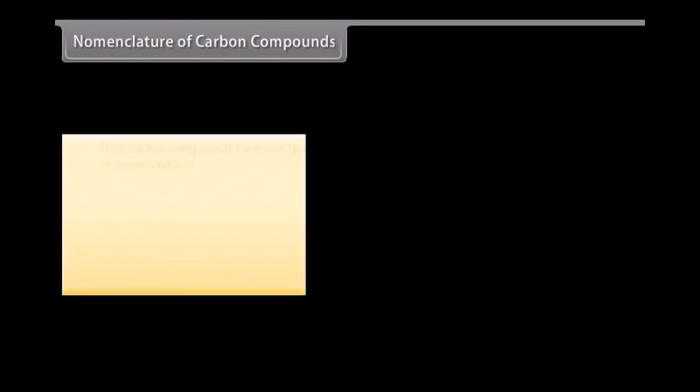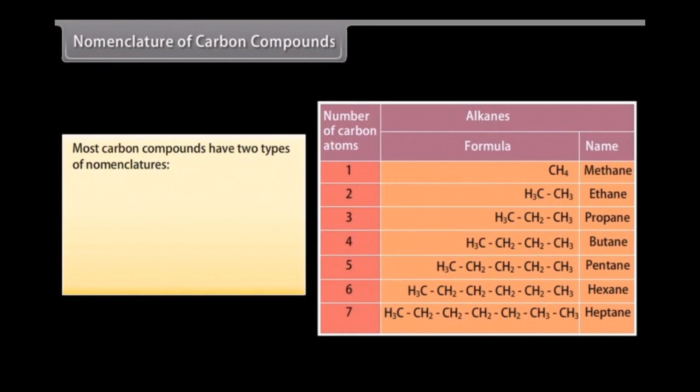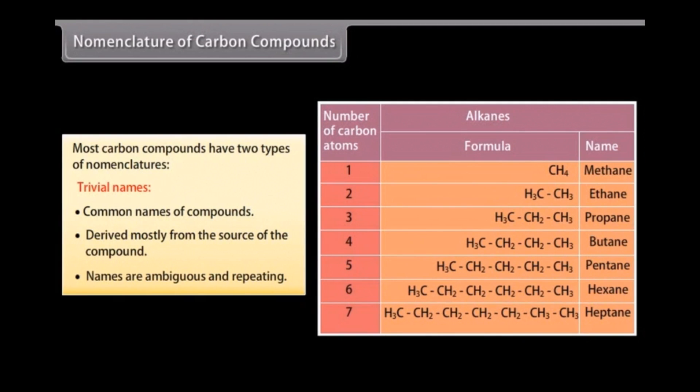Nomenclature of carbon compounds. The system of assigning a proper name to a particular carbon compound is called nomenclature. Most carbon compounds have two types of names. Trivial names are the commonly used names of carbon compounds. These are derived mostly from the source of the compound. However, names formed using this manner are ambiguous and repeating.